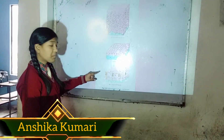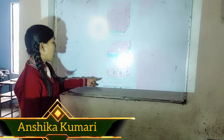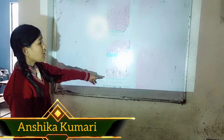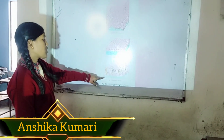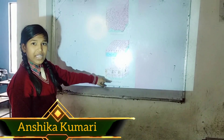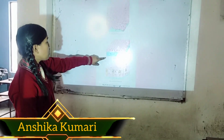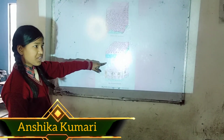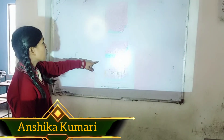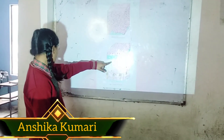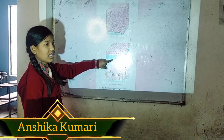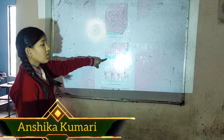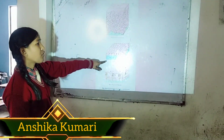Columnar epithelial tissue — columnar meaning pillar-like — allows movement across the epithelial barrier. Cuboidal epithelial tissue consists of cube-shaped cells and is found in the lining of the kidney.